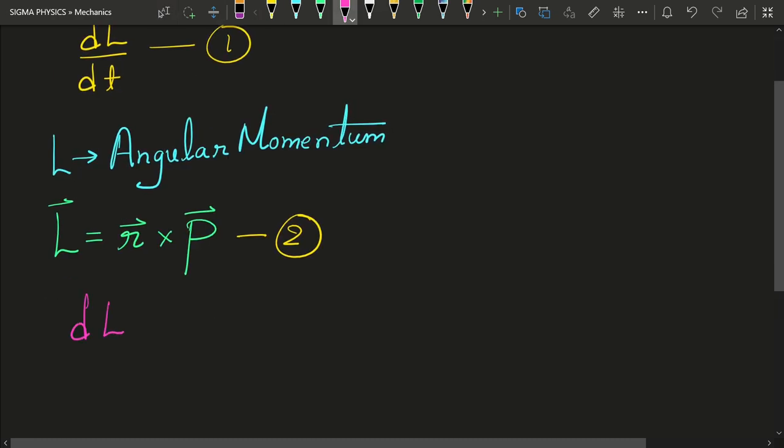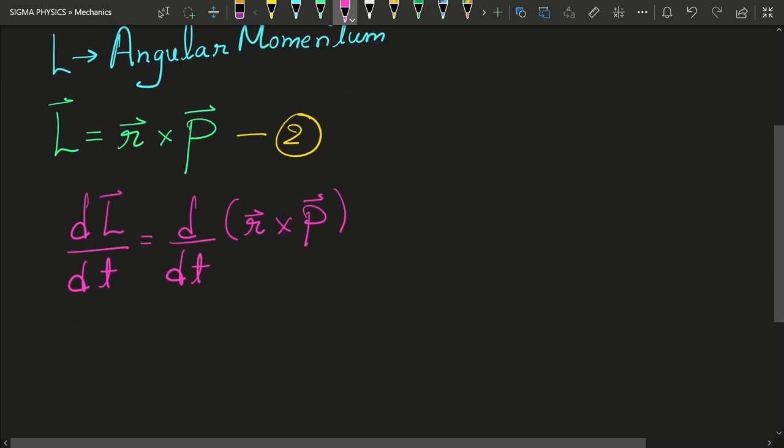Then we will get dL upon dt is equal to d by dt of r cross p. Now let us use the product rule over here.